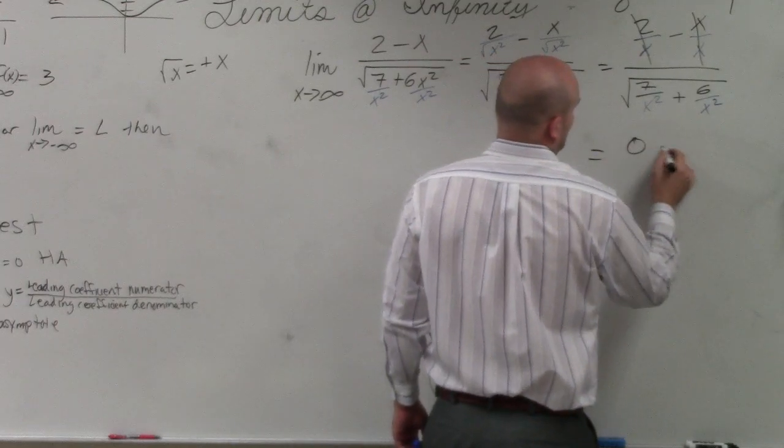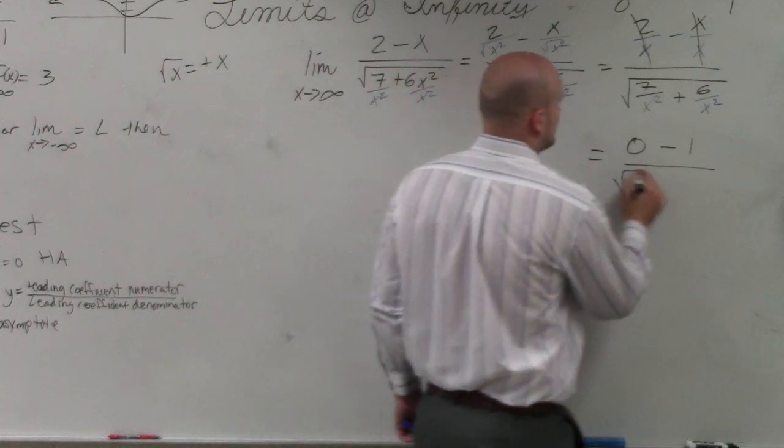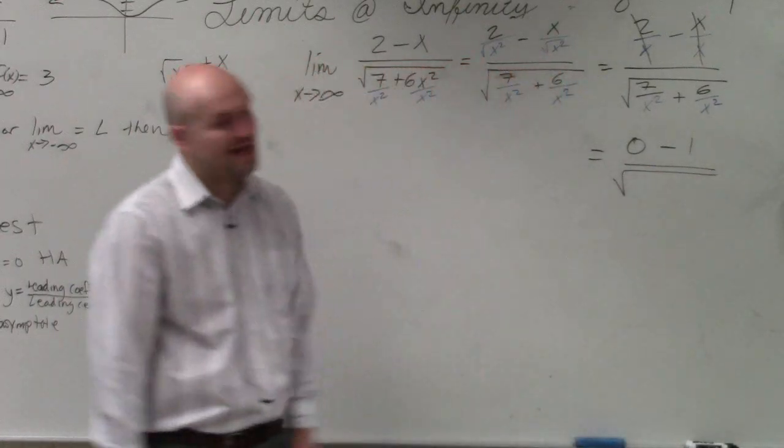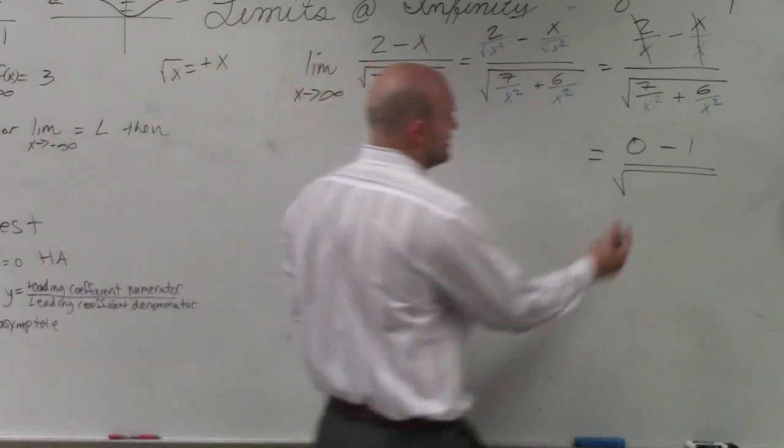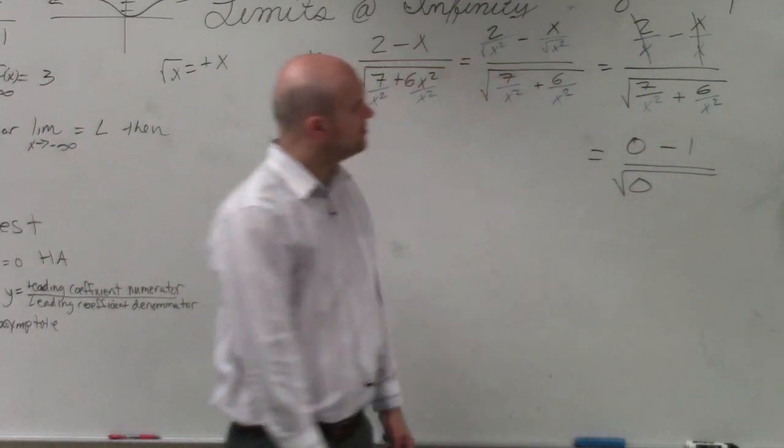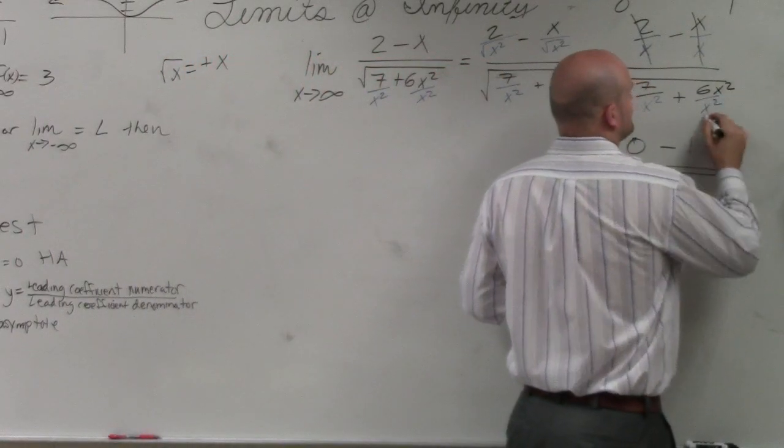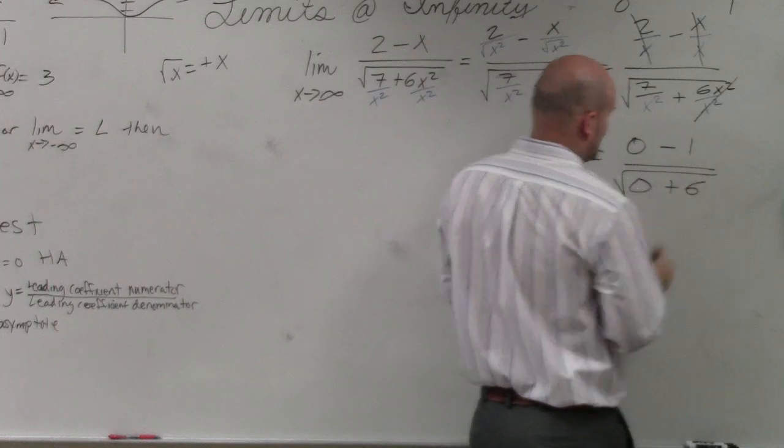So right now we have 0 minus 1, all over the square root of any number divided by x raised to a higher power is going to be 0. So it is 6 times x squared. So those divide out, and that's going to be plus 6.